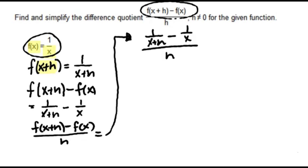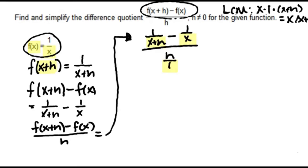We call this type of expression a complex fraction — that's when you have a fraction inside of a fraction. To simplify this, we're going to use something called clearing fractions. We look for the least common multiple of the denominators of the smaller fractions. Writing h as h over 1, the least common multiple is the product of each factor: 1 times x times x plus h, which simplifies to x times x plus h.